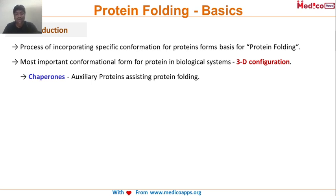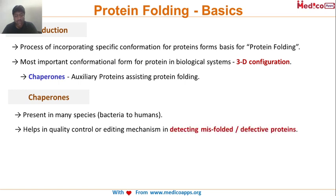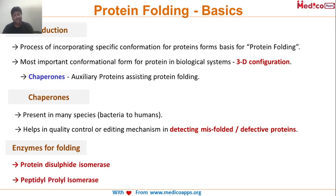The most important molecules for protein folding are chaperones - auxiliary proteins that assist in protein folding. Chaperones are a very high-yield topic with many exam questions. There are also two important enzymes involved in protein folding: protein disulfide isomerase and peptidyl prolyl isomerase.